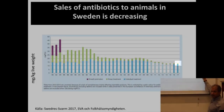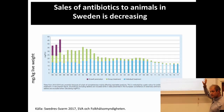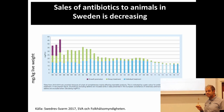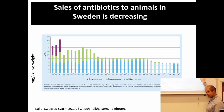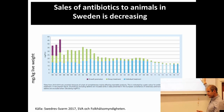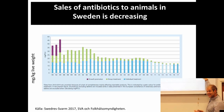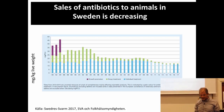Almost all the antibiotics used now in Sweden are given to individual animals that are sick, which is really good. This shouldn't be zero either, because we don't want animals to suffer. Some antibiotics, such as carbapenems, are not used for animals. So there should be some usage, but it's pretty small compared to many other countries. This is not the story in all parts of the world.